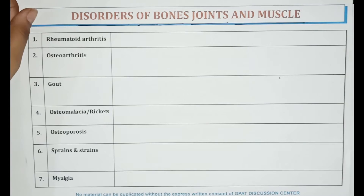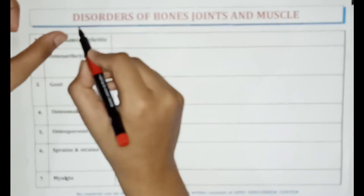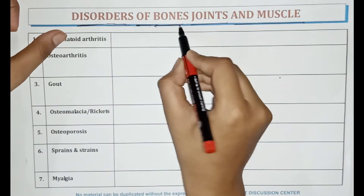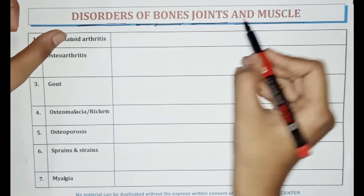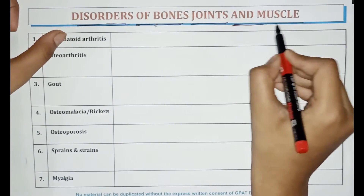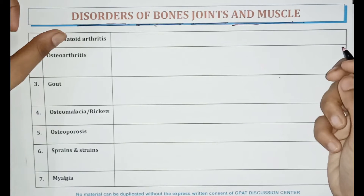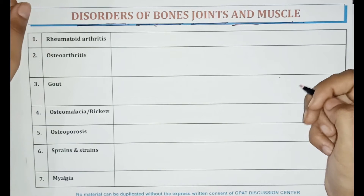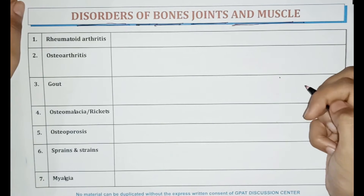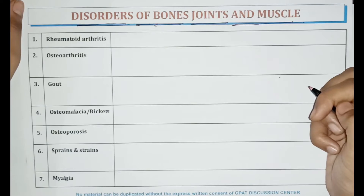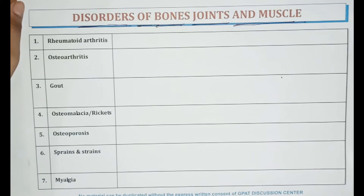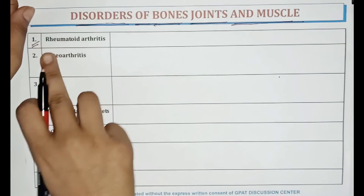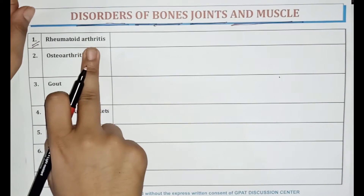Today in this video, we will discuss about disorders of bones, joints and muscles. Questions from these disorders are very frequently asked in pharma competitive examinations. The first disorder is rheumatoid arthritis.